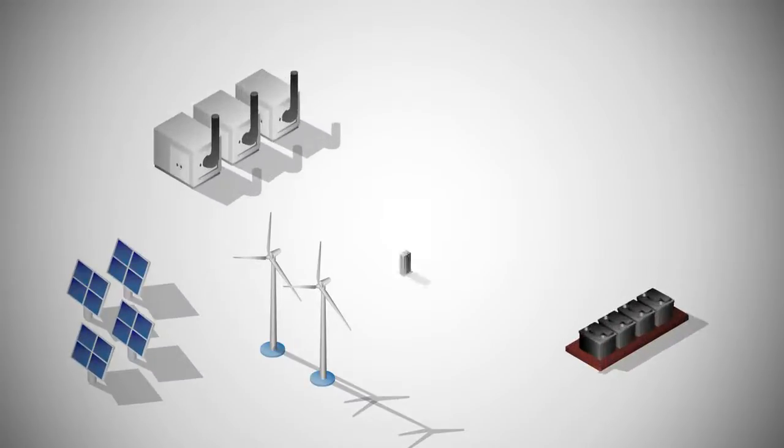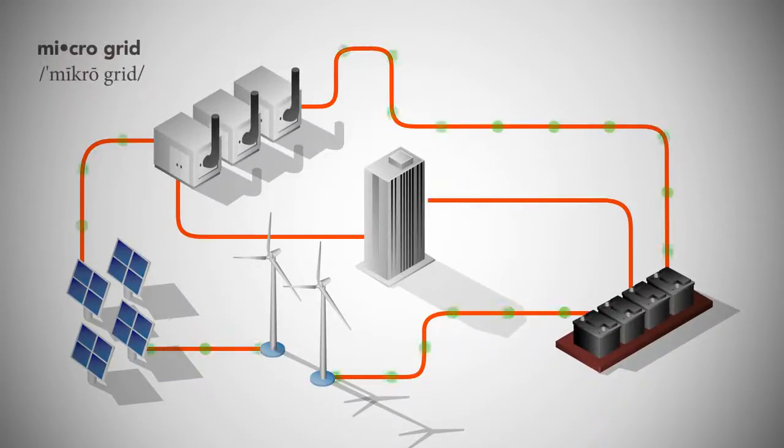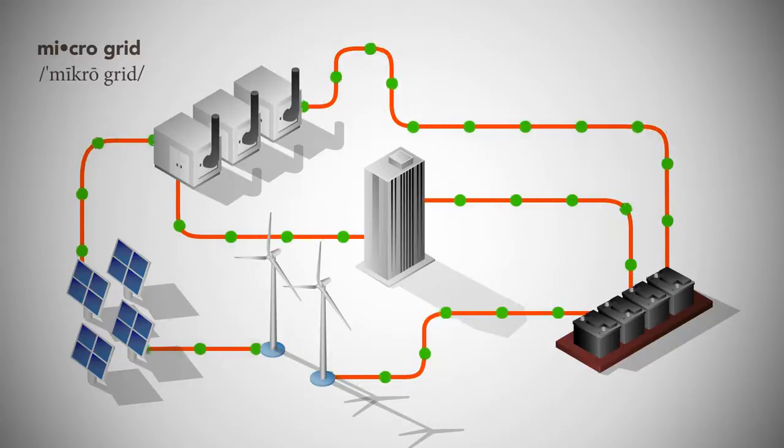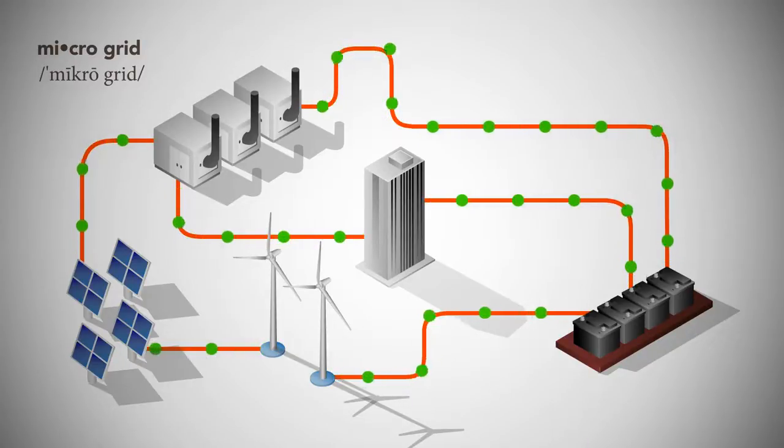A micro grid acts like a mini utility, generating electricity and maintaining power independent of the main utility grid during outages. Micro grids often include a mix of renewable energy sources, fossil fuels and batteries.